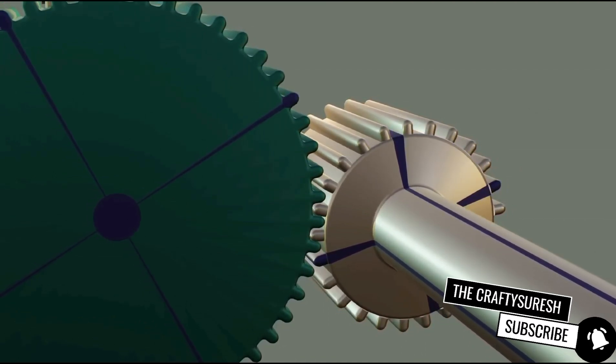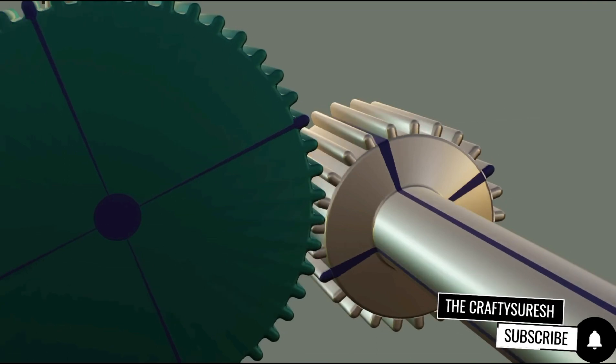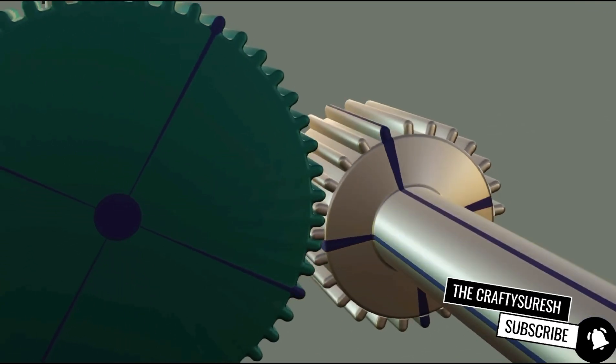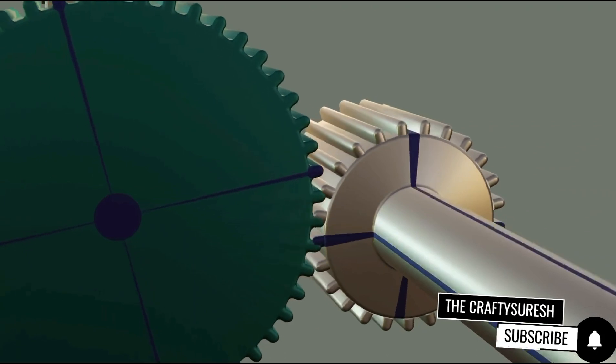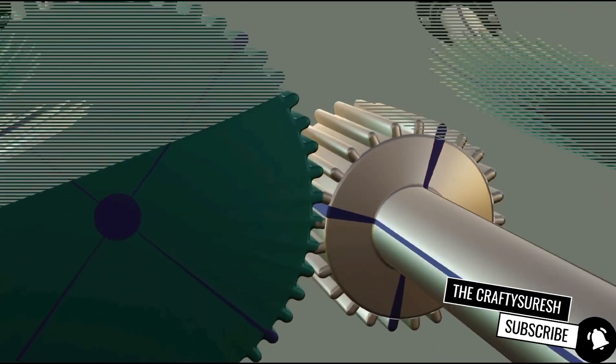So whenever two gears are meshed, the primary condition is that their teeth size should be equal. Otherwise, there can be slippage, noise and the gear will not be meshed properly.